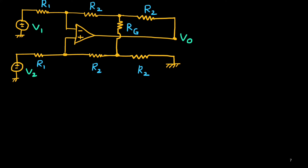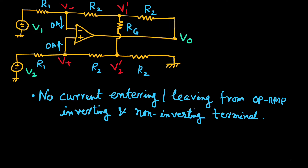Let us consider this circuit closely. We have two sources and output V0, with RG connected between V minus and V plus — these two terminals. We will consider the potential at the non-inverting terminal as V plus and at the inverting terminal as V minus. The node potential at the non-inverting side is V2 prime and at the inverting side is V1 prime. There is no current entering at either terminal. With this information we will find V plus and V minus in terms of sources V1, V2 and node potentials V1 prime and V2 prime.